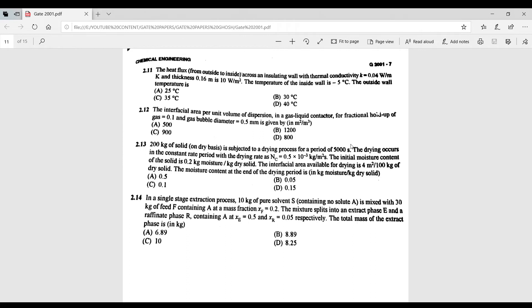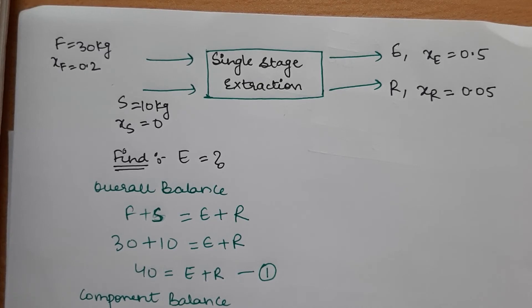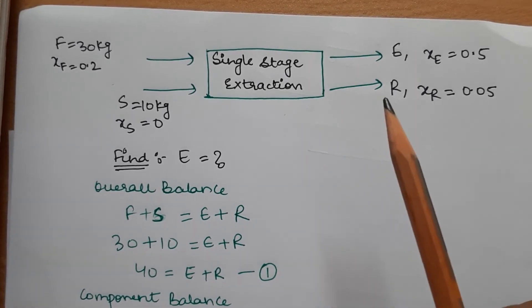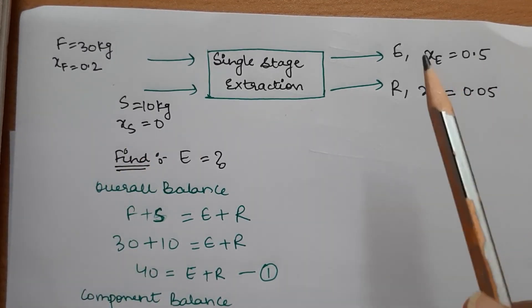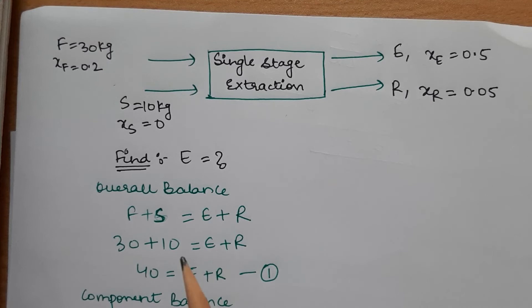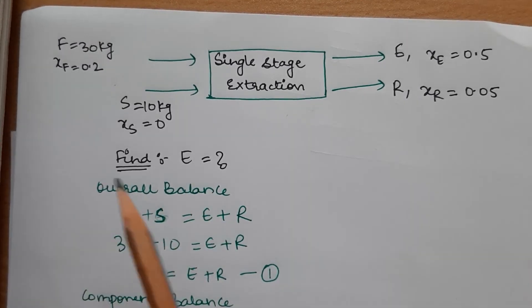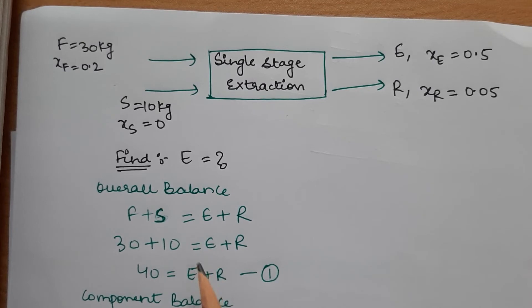Question 2.14: in a single-stage extraction process, 10 kg of pure solvent S is mixed with 30 kg of feed. We must find the total mass of the extract phase. Drawing a diagram: feed = 30 kg, solvent = 10 kg, with compositions given. Applying overall balance: F + S = E + R, so E + R = 40 kg (equation 1).